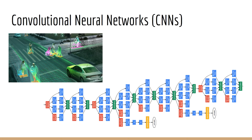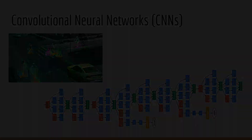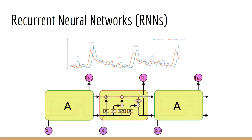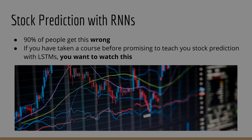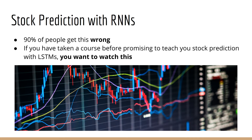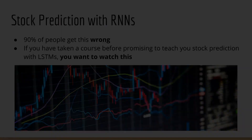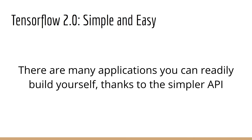Next we're going to look at convolutional neural networks, which are specialized neural networks for computer vision. Then we'll look at recurrent neural networks, which are specialized for sequence data such as time series, text, speech, and DNA. We'll even apply RNNs to stock prediction — one of my favorite exercises, because it teaches you what 90 percent of other people are doing wrong. If you've ever used an LSTM for stock prediction, you'll definitely want to watch this.